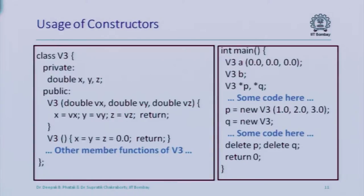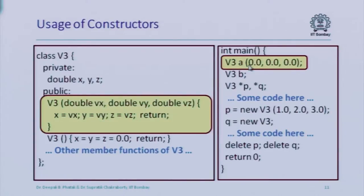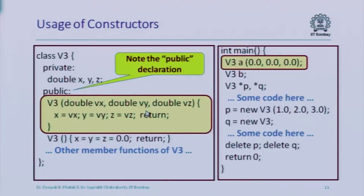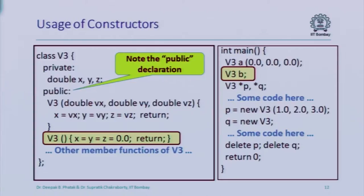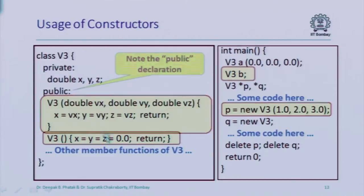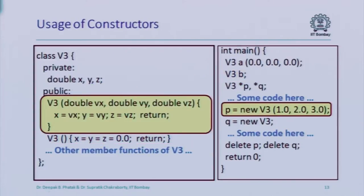Even if we have multiple constructor functions, there is no confusion about which one is being called. For example, here we are passing three double-valued parameters, so this constructor is called. And here we are not passing any parameters, so this constructor is called. Otherwise, they are just like normal member functions.